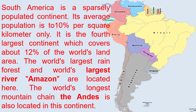South America is a sparsely populated continent. Its average population is about 10% per square kilometer. It is the fourth largest continent, covering about 12% of the world's land area. The world's largest rainforest and the world's largest river, the Amazon, are located here. The world's largest mountain chain, the Andes, is also located in this continent.